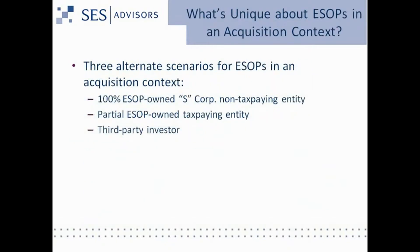So what's unique about ESOPs in an acquisition context? We really have three kinds of things to look at. One is the 100% ESOP-owned S-Corporation, which really doesn't pay any current taxes on its taxable income either directly or by attribution. Taxes are ultimately paid by ESOP participants when they receive distributions from the plan. So we have use of 100% of our cash flow for corporate purposes in an ESOP-owned S-Corporation.